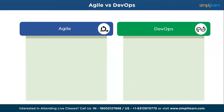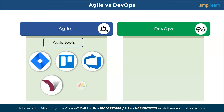Let us look at the Agile and DevOps tools. The popular Agile tools widely used in the industry are Jira, Trello, Azure DevOps, Version 1, and Monday.com. These tools offer a range of features to support Agile practices including backlog management, sprint planning, task tracking, collaboration, and reporting.